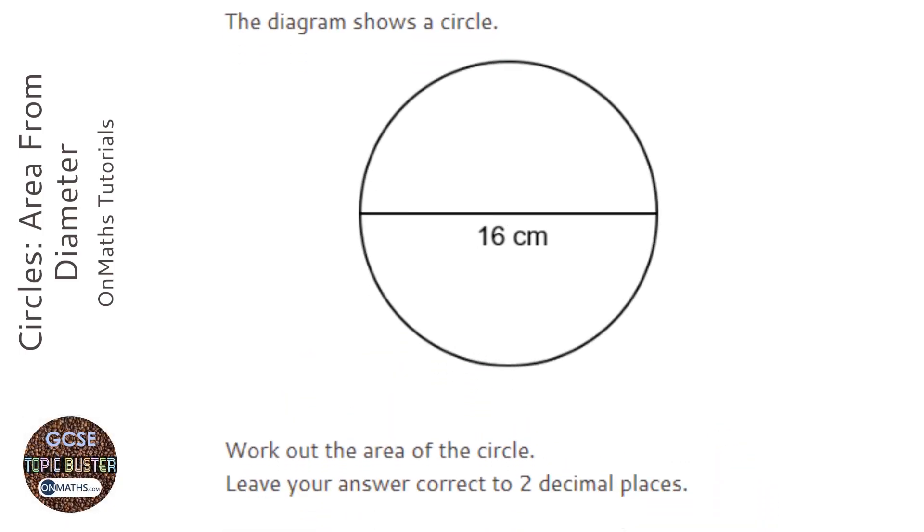To work out the area of this circle we first of all need to remember the formula which is area equals pi times r squared.